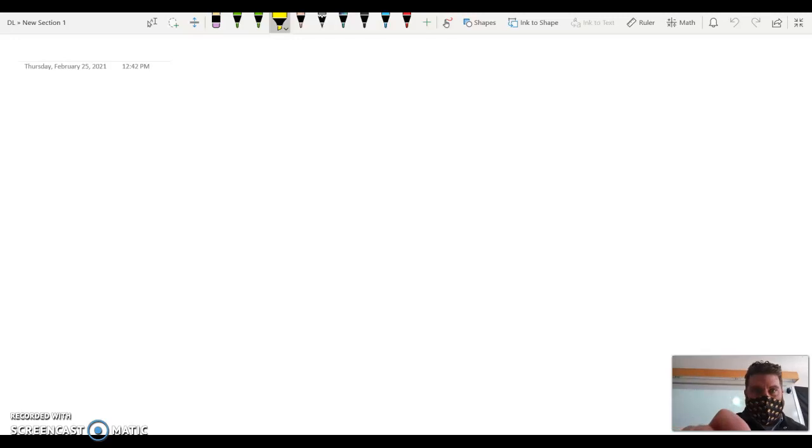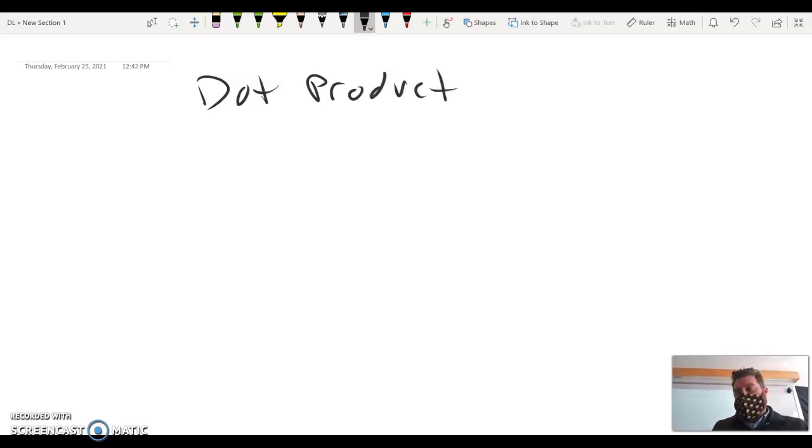The first operation with vectors is fairly easy and it's called the dot product. And the dot product is as close to multiplying as we get with vectors. We never multiply a vector times another vector. But what we can do, and it has several uses, one of which we'll look at today, is called the dot product.